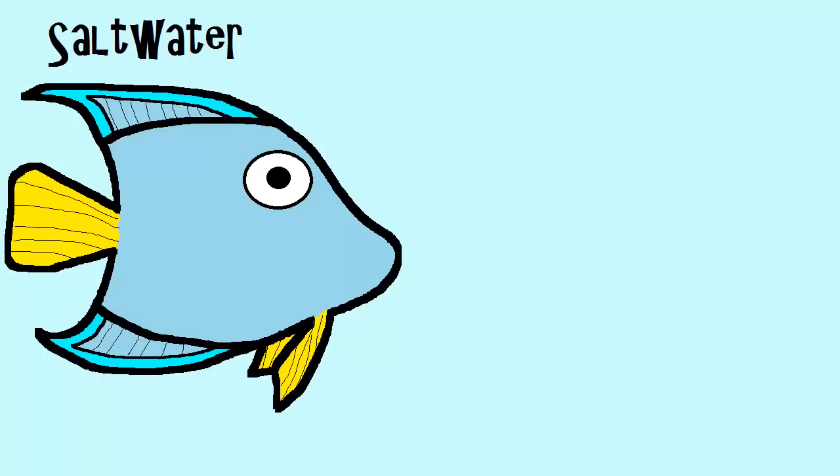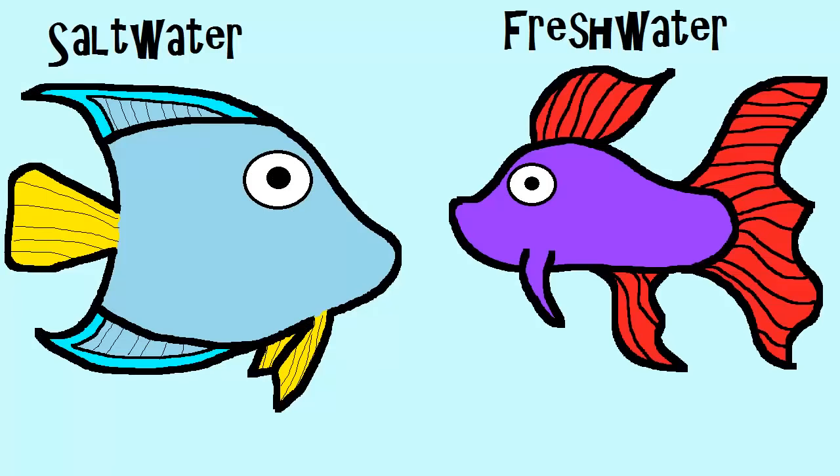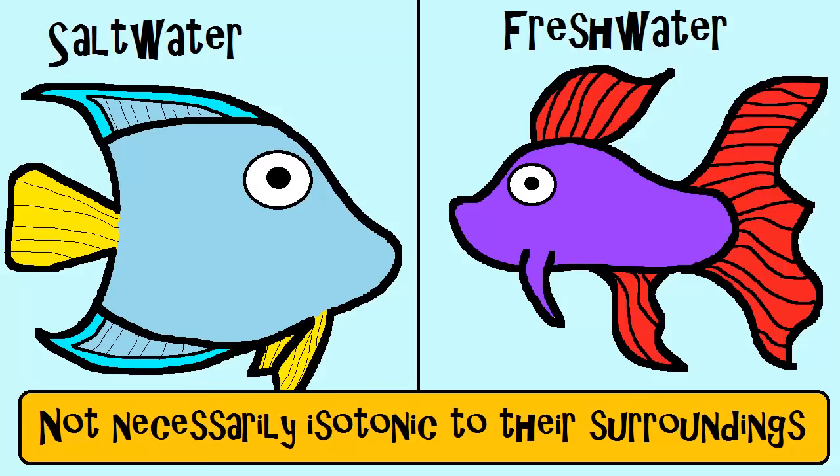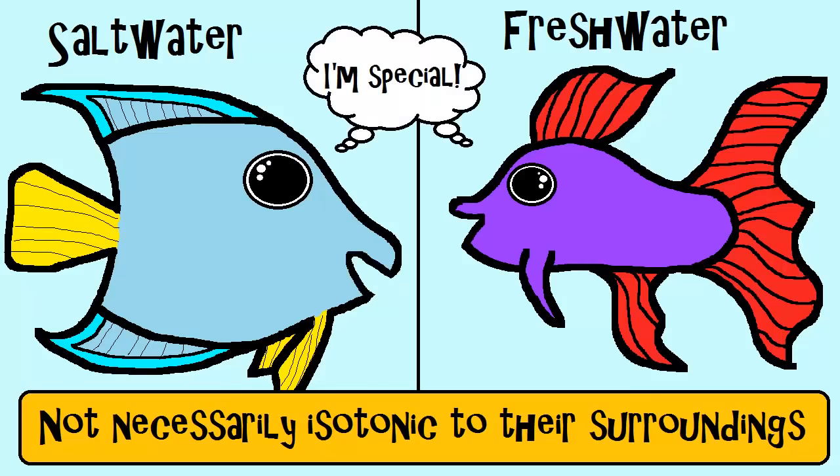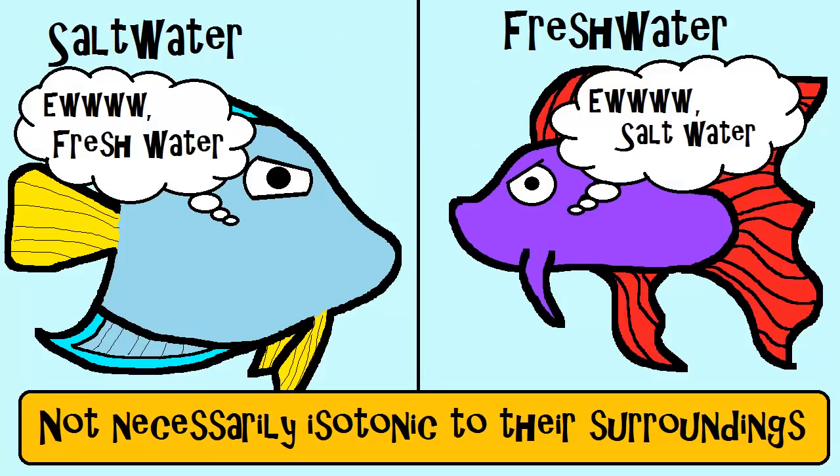Now one thing to clarify, saltwater fish and freshwater fish are not necessarily isotonic. Remember that means equal concentration to their surroundings. But they have special adaptations that allow them to live in their environment. And usually they can't make a major switch from a saltwater environment to a freshwater environment.